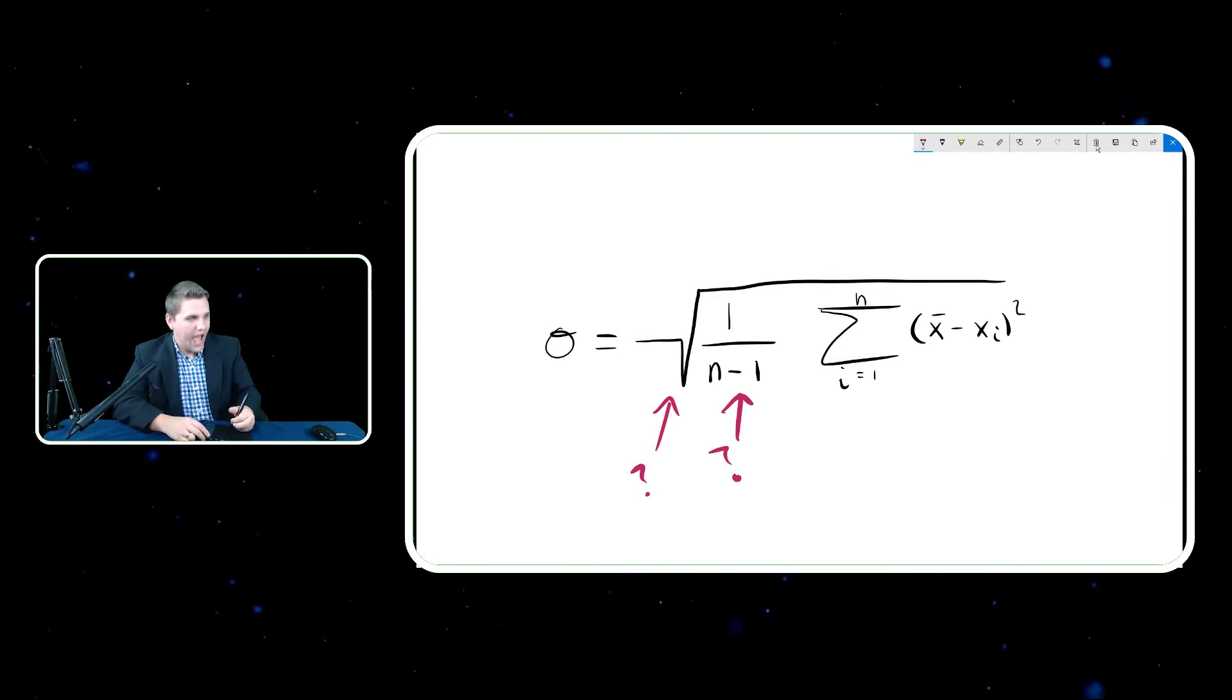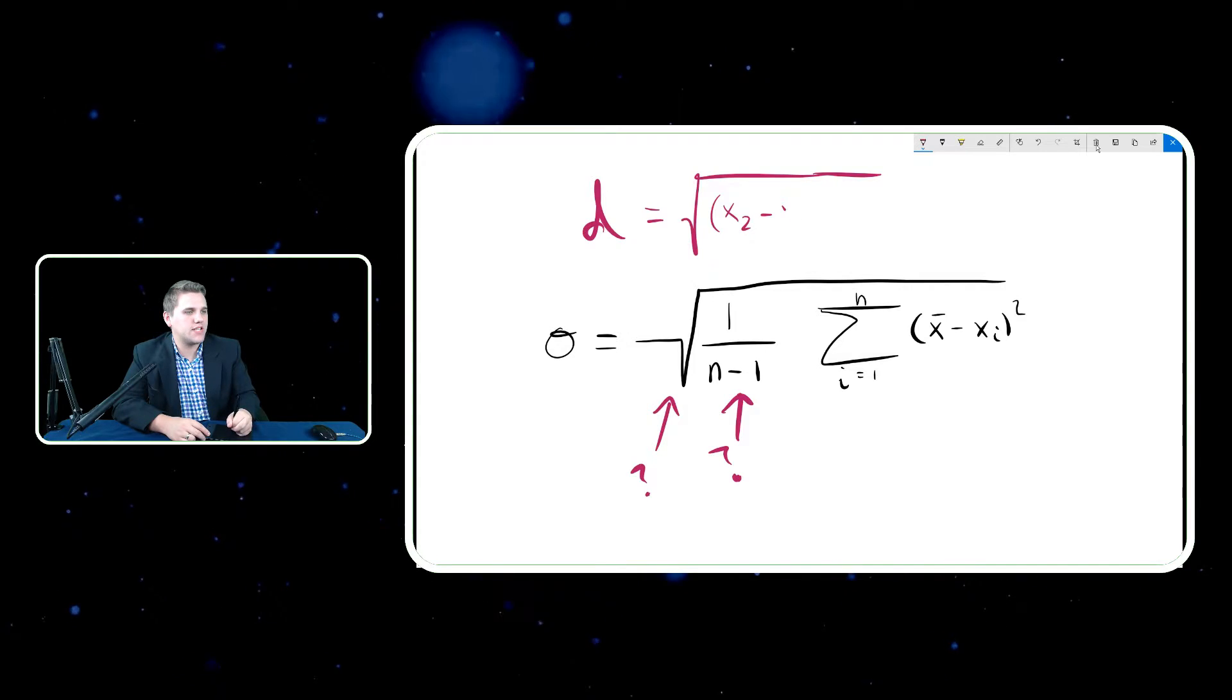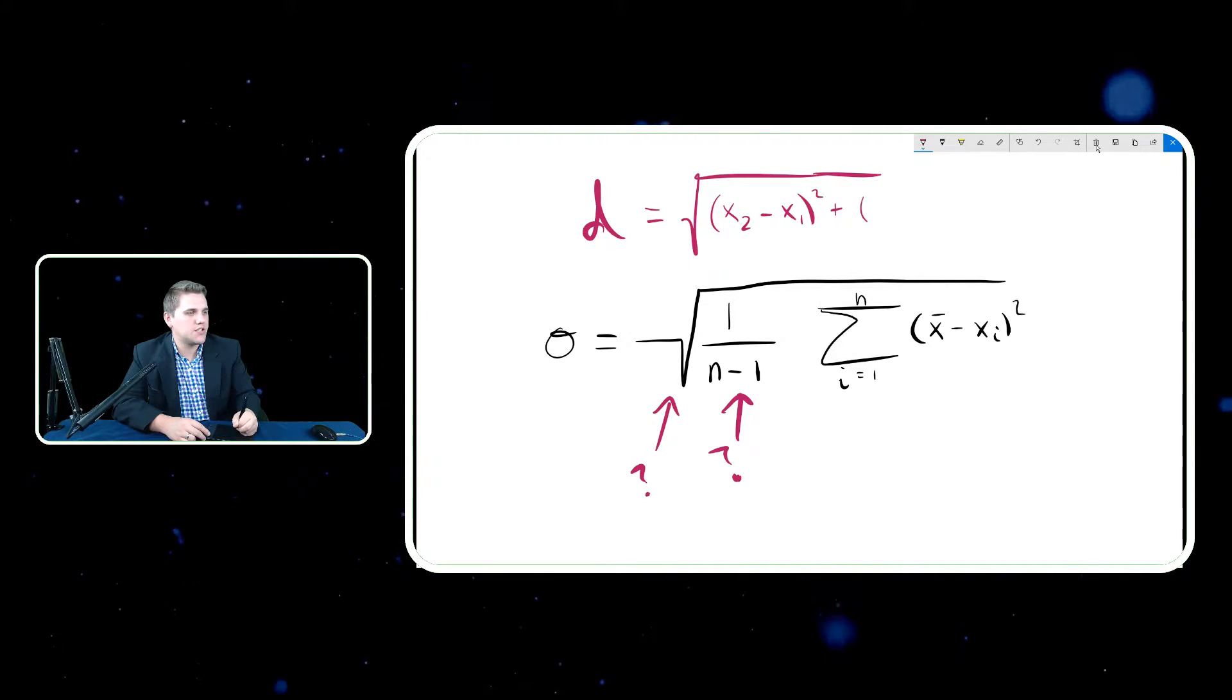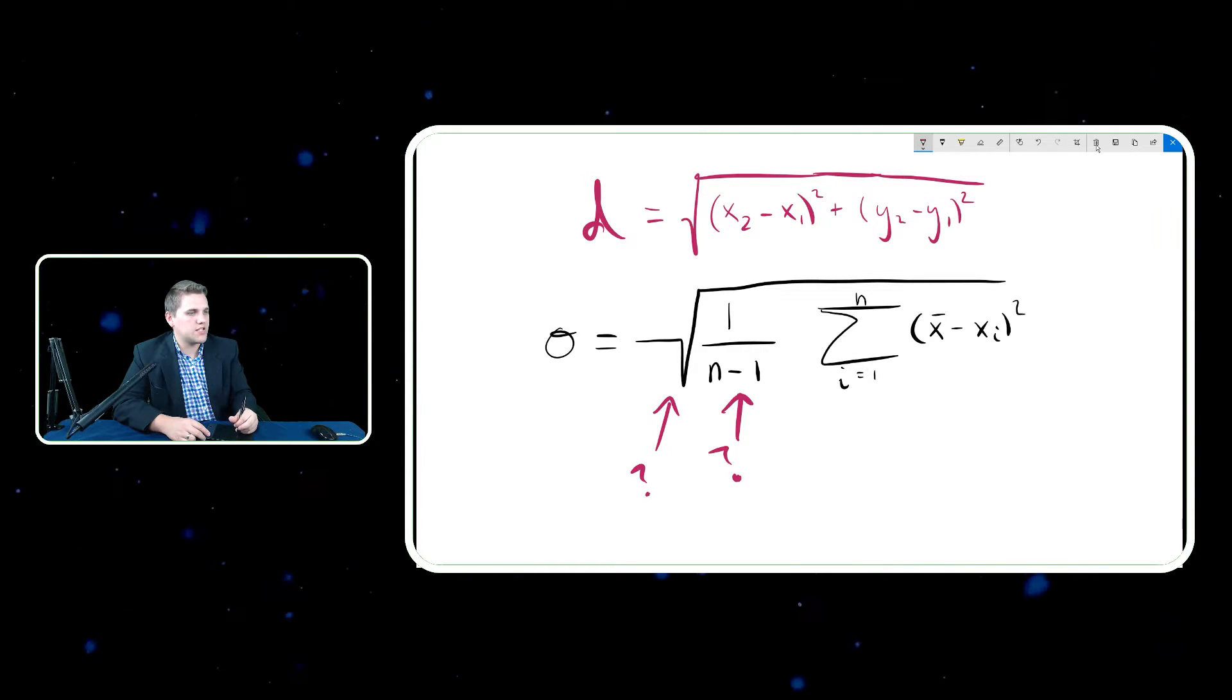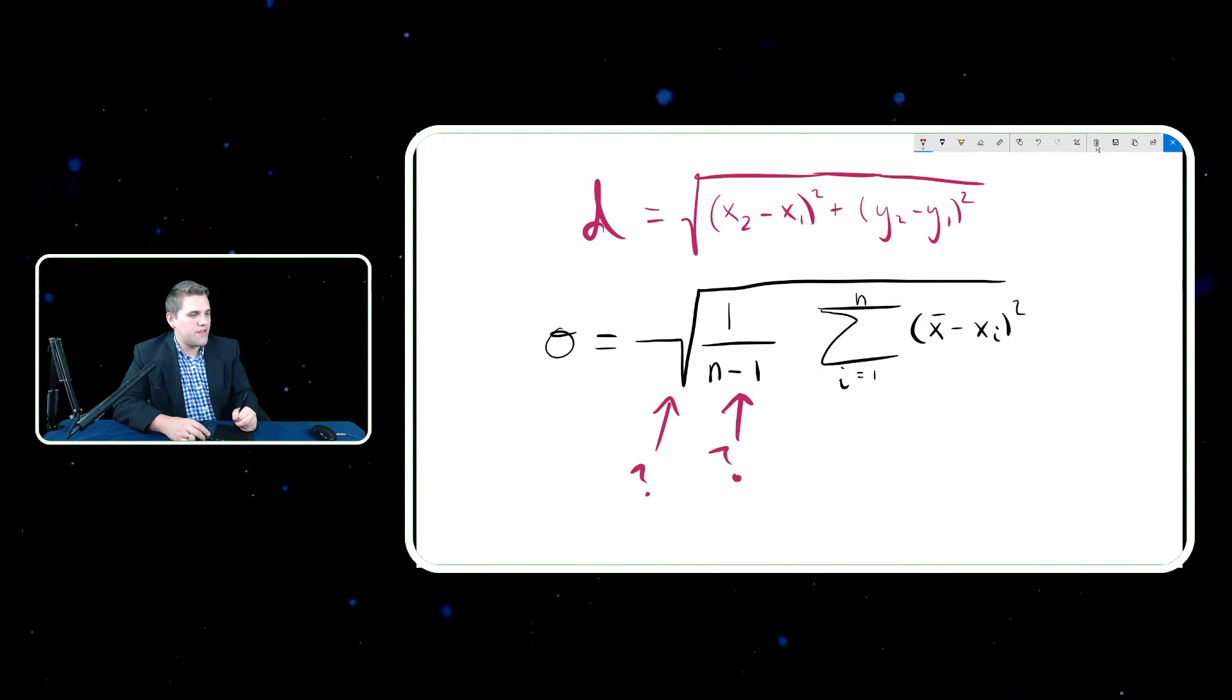However, if you ever want to find the distance between two points, it's actually the square root of x2 minus x1 squared plus y2 minus y1 squared. If you wanted to find the distance, let me give you guys another color here.